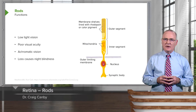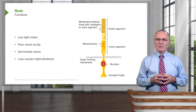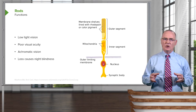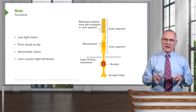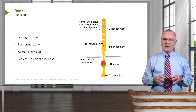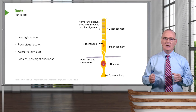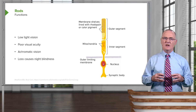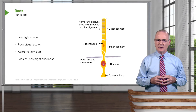Rods start to show up outside of the fovea centralis and are seen exclusively outside of the macula, where they are responsible for low light vision. As a result, they have poor visual acuity and are responsible for achromatic vision — we see shades of gray and not color. Excessive loss of rods impairs our ability to see in low light or during nighttime, and thus this can be a cause of night blindness.